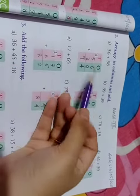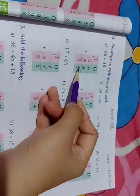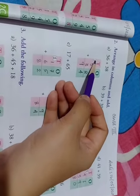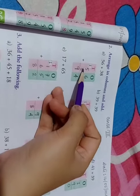56 plus 38. 6 plus 8 is 14, write 4 and 1 is carried over. 1 plus 5 is 6, 6 plus 3 is 9.